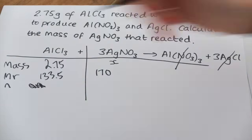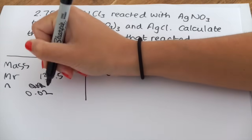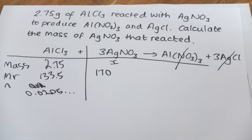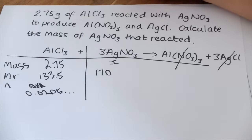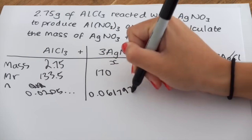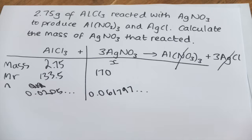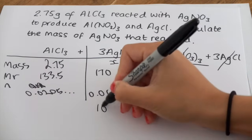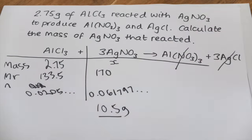Calculate the number of moles of aluminium chloride: 2.75 ÷ 133.5 = 0.0206 moles. Because we know from the balanced symbol equation that three times as much silver nitrate reacts, we multiply that number by 3 to get the number of moles of silver nitrate. Don't over-round at this stage because you don't want to add inaccuracies. Now calculate the mass by multiplying moles by Mr, and the mass of silver nitrate that reacted is 10.5 grams (to 3 significant figures).